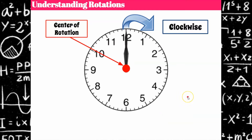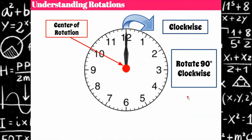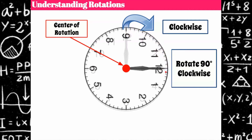So let's model some of the terms you'll see. Your instructions could say rotate 90 degrees clockwise. On the coordinate plane, just like on a clock, 90 degrees is a quarter turn. We're going to rotate the clock so the 12 travels 90 degrees in the clockwise direction — a quarter turn. Notice that the center of rotation has not changed.